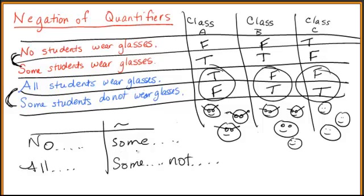If it's a some statement, you negate it with a no statement. So if it's some students wear shoes, the negation would be no students wear shoes. If it starts out saying some people do not have hair, then the negation is going to be all people have hair.